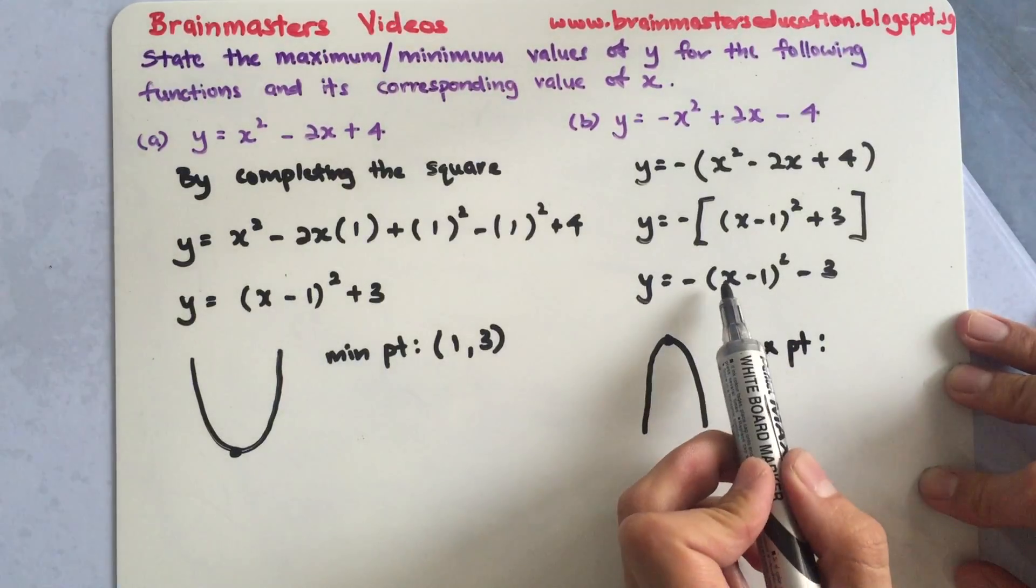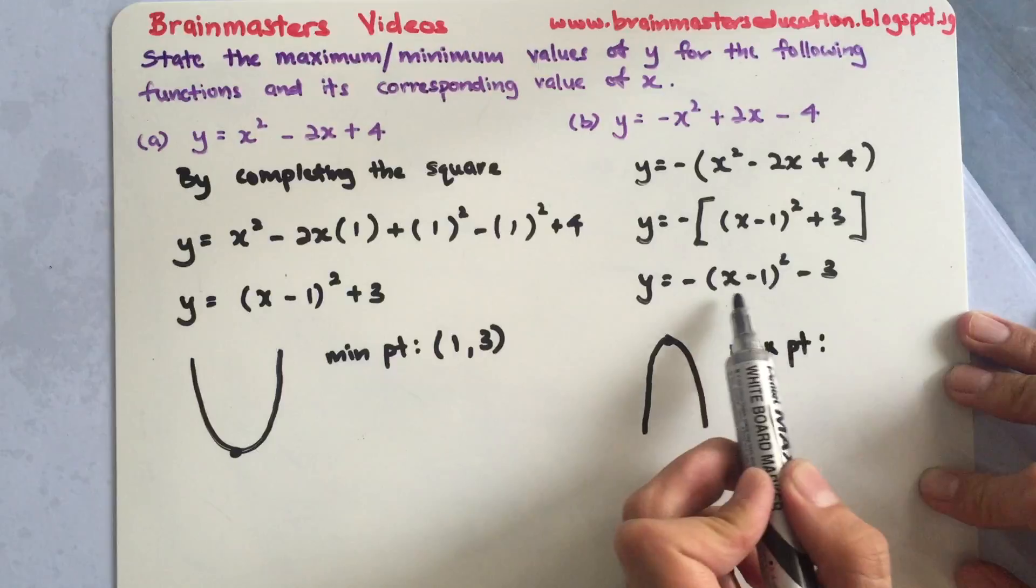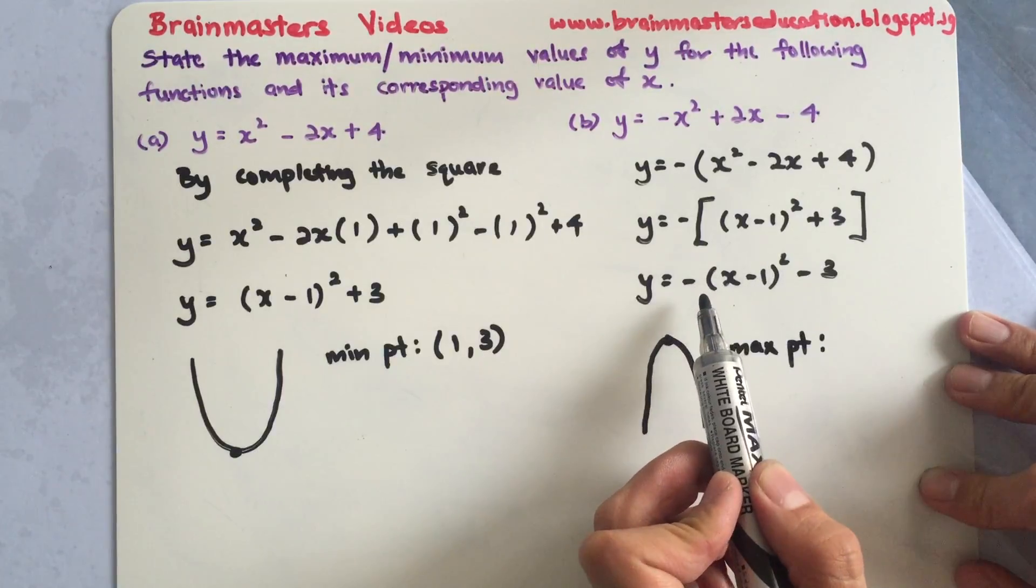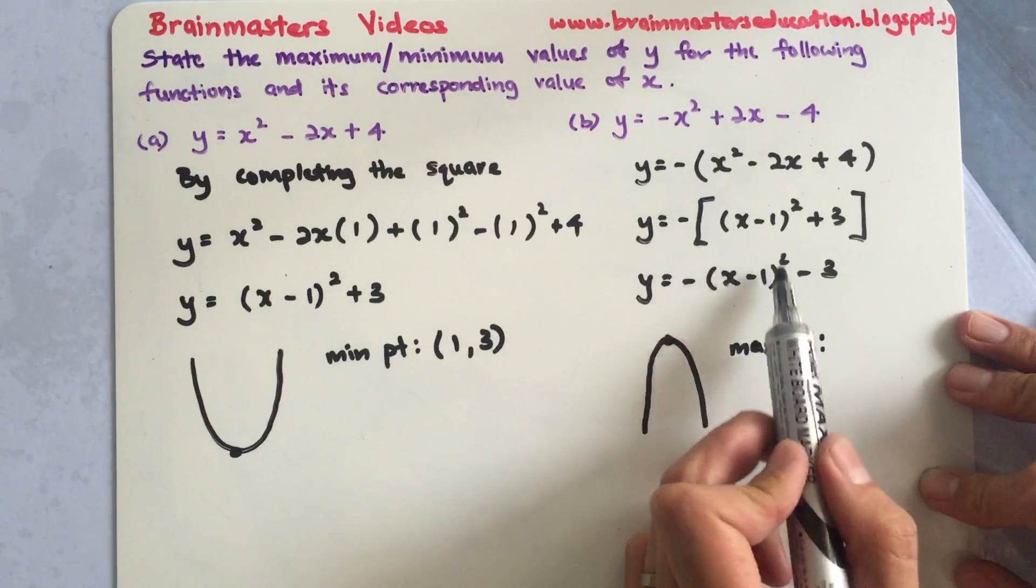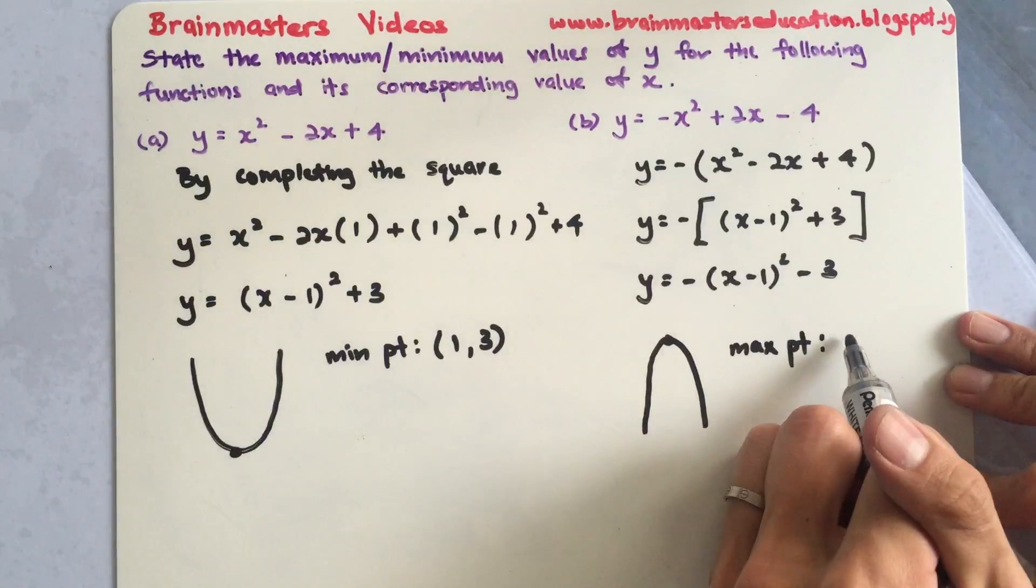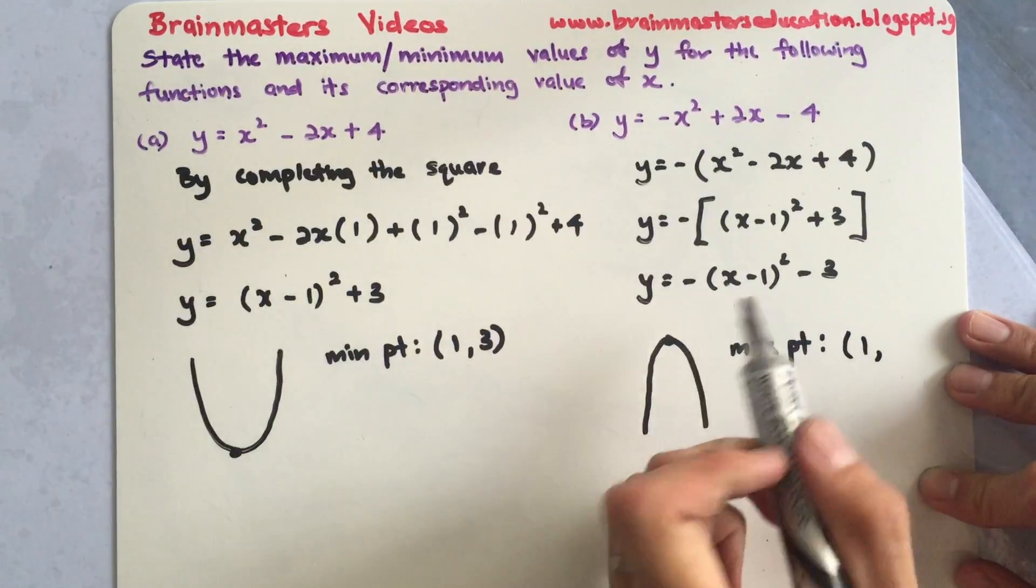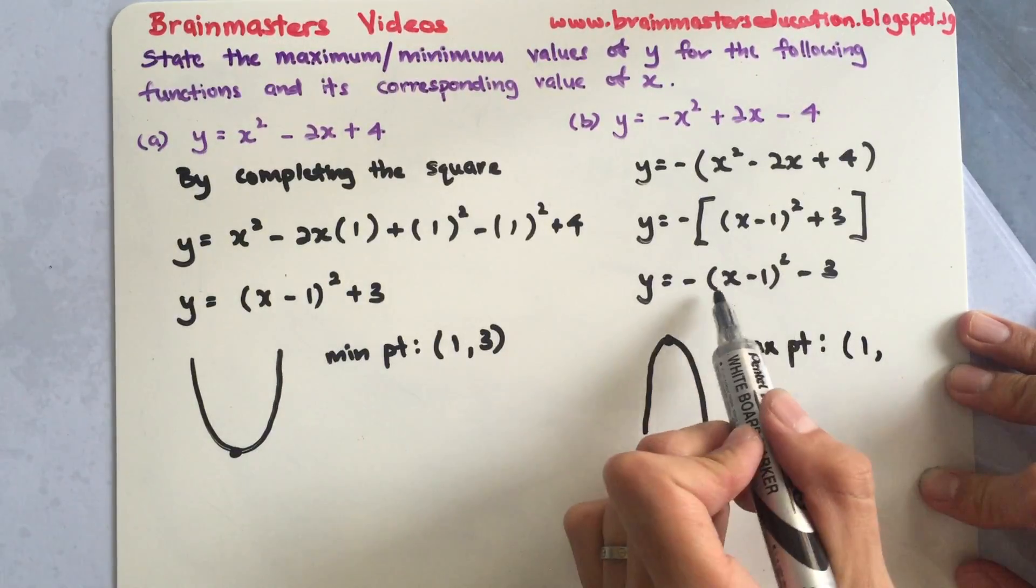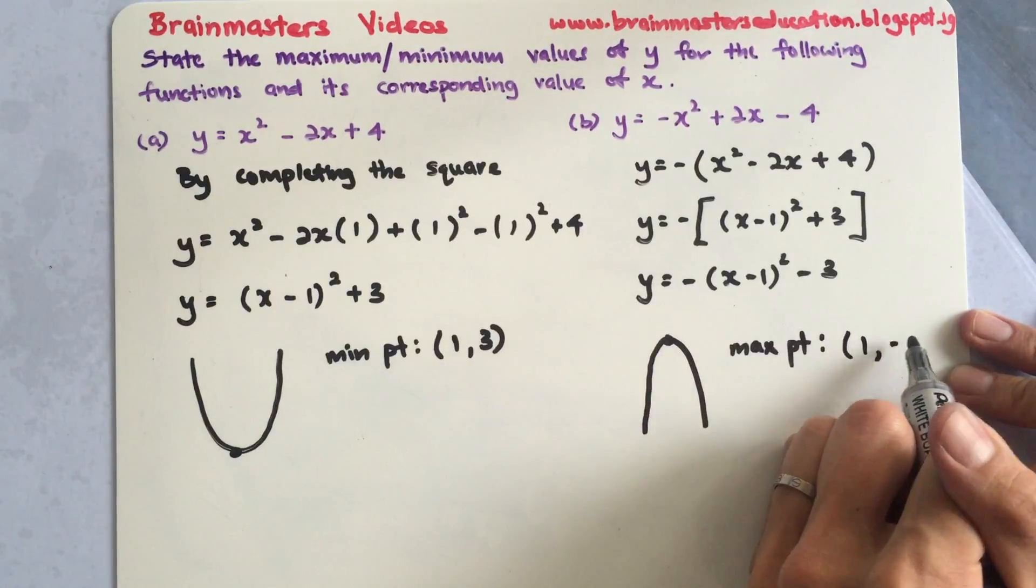To find the maximum point, same thing, I need to achieve 0 here. When this is 0, the negative doesn't matter anymore. To achieve 0, my x will have to be 1. When this is 0, my y will be negative 3.